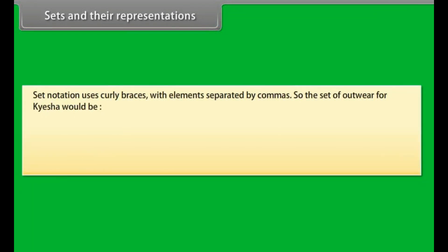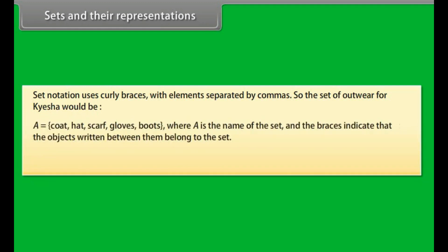Set notation uses curly braces with elements separated by commas. So, the set of outwear of Kesha would be A equals coat, hat, scarf, gloves, boots.